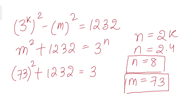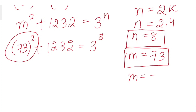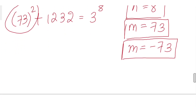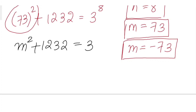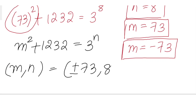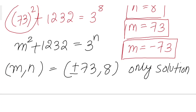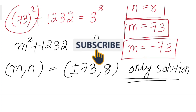Now m = 73. We can verify: 73 squared plus 1232 equals 5329 + 1232 = 6561 = 3 to the power 8. Since this involves a perfect square, m can also be −73. So the only solutions to this equation are m = ±73 and n = 8. Thank you for watching, see you next time.